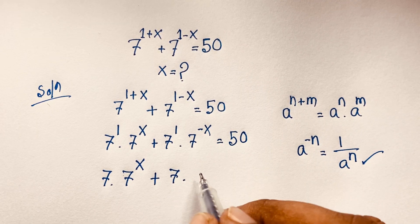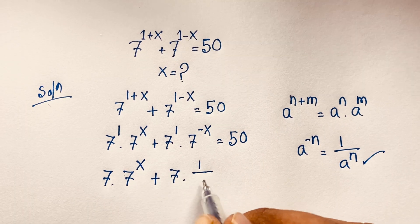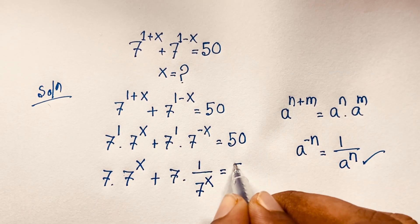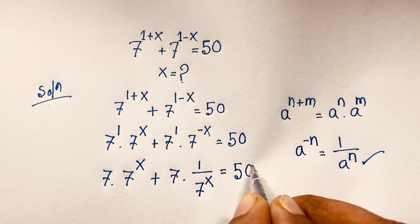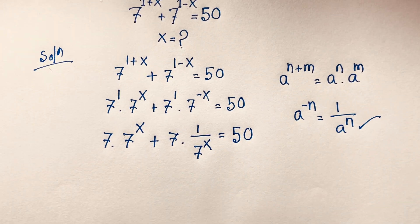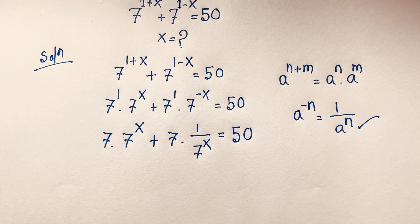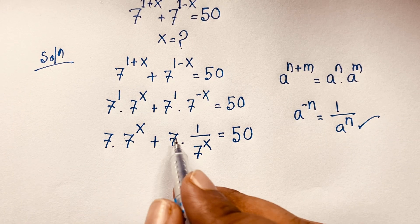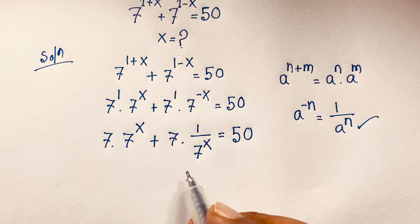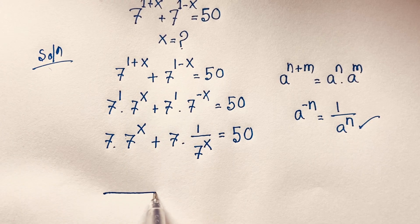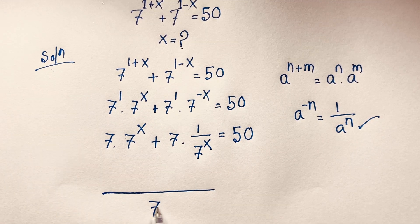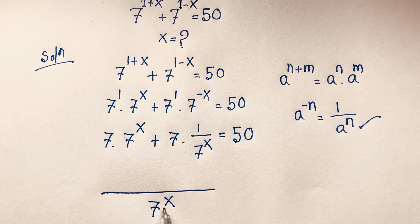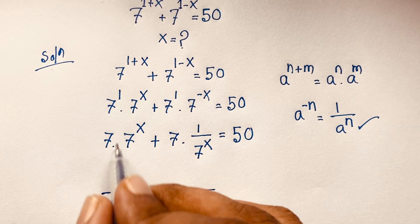Applying that formula, 7 to the power negative x becomes 1 over 7 to the power x, so we have: 7 times 7^x plus 7 times (1 over 7^x) equals 50. The least common value here is 7^x.